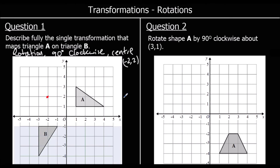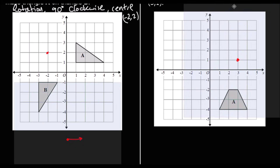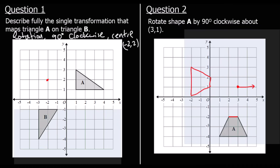Question 2: rotate shape A 90 degrees clockwise about (3, 1). So (3, 1) is here — it's going to go 90 degrees clockwise. Using tracing paper held at the centre (3, 1), the line is going up at the moment; if it goes 90 degrees clockwise it'll be going to the right. I'll draw around shape A, rotate 90 degrees clockwise so the arrow is going to the right, and that is where the new shape will be. Drawing around that and removing the tracing paper gives us the new shape.